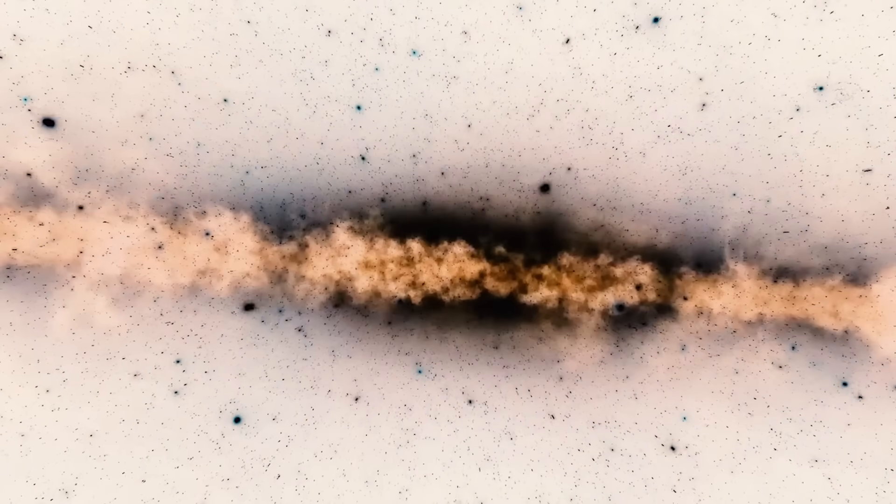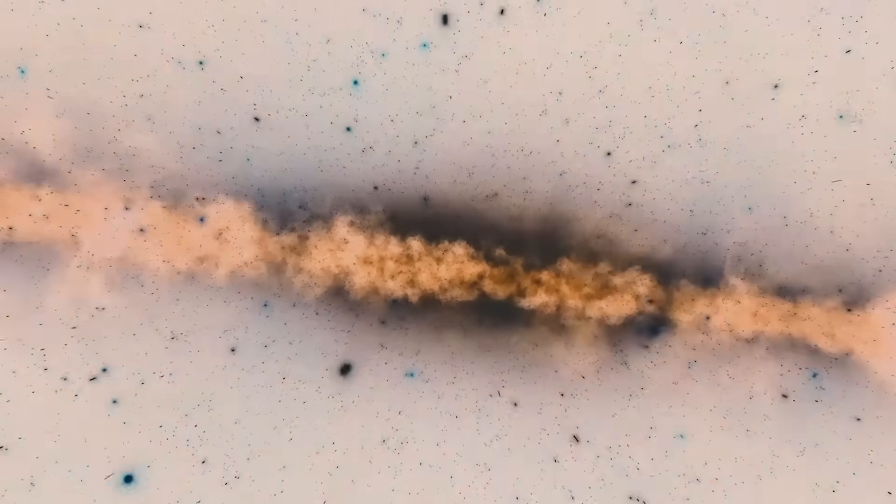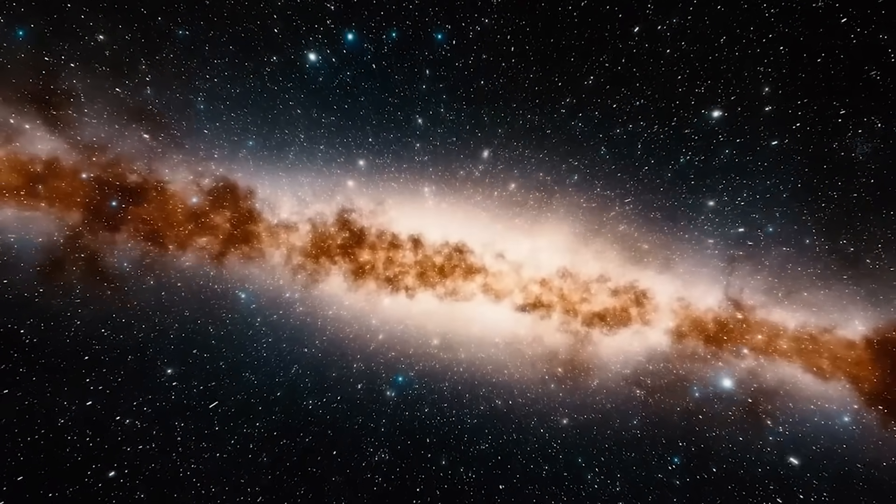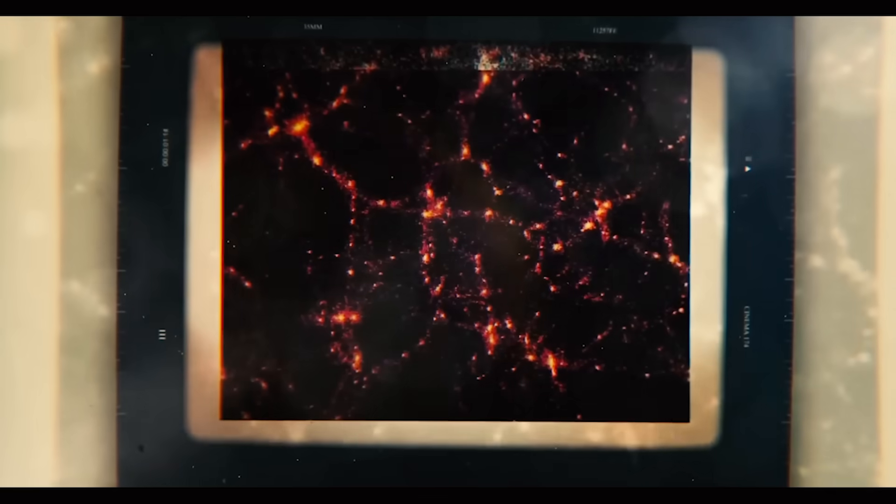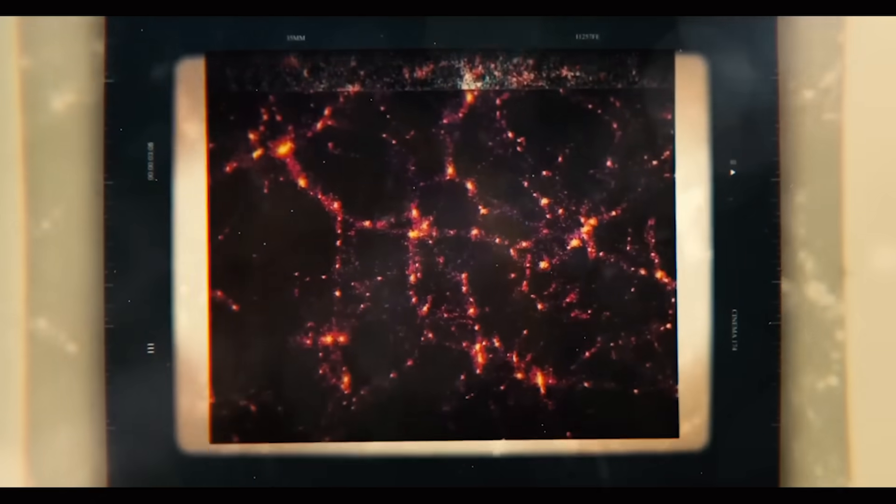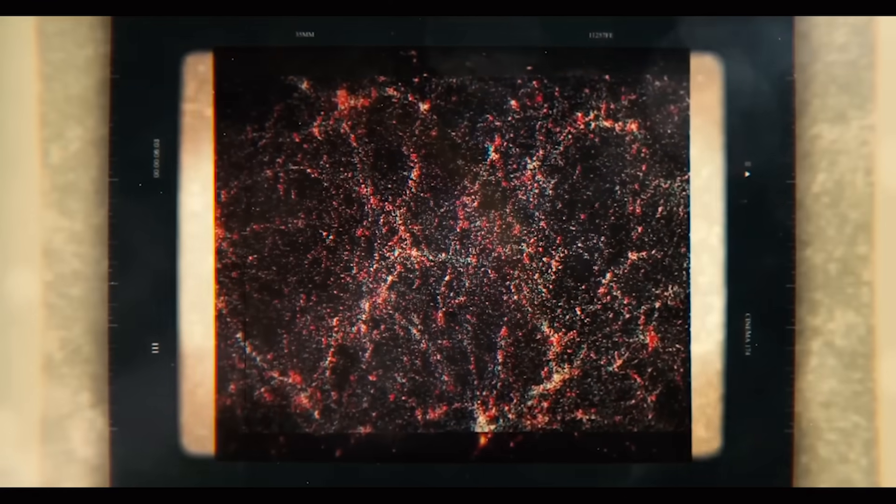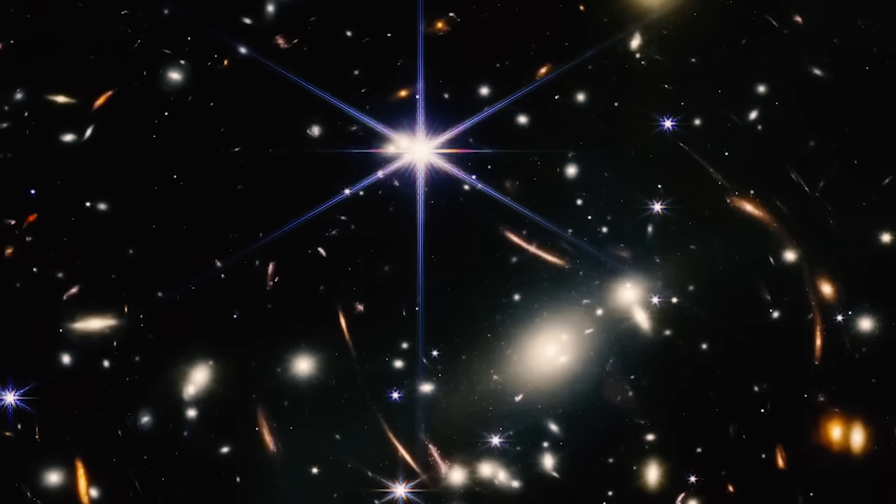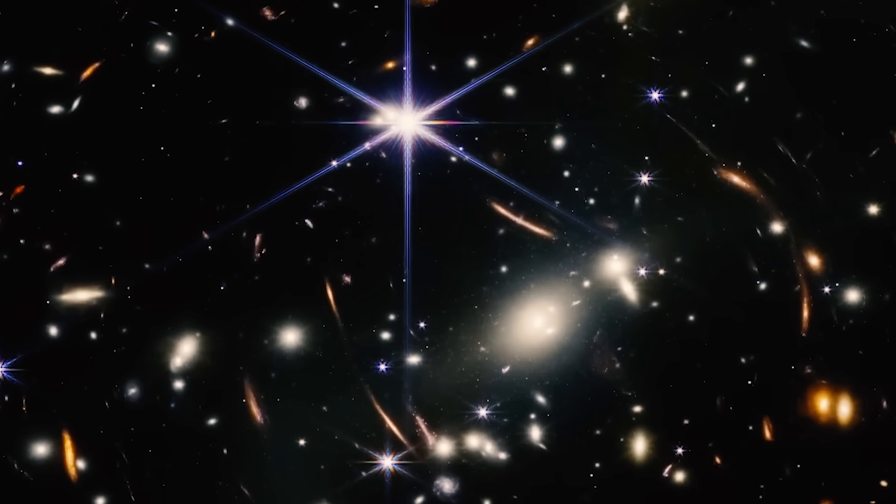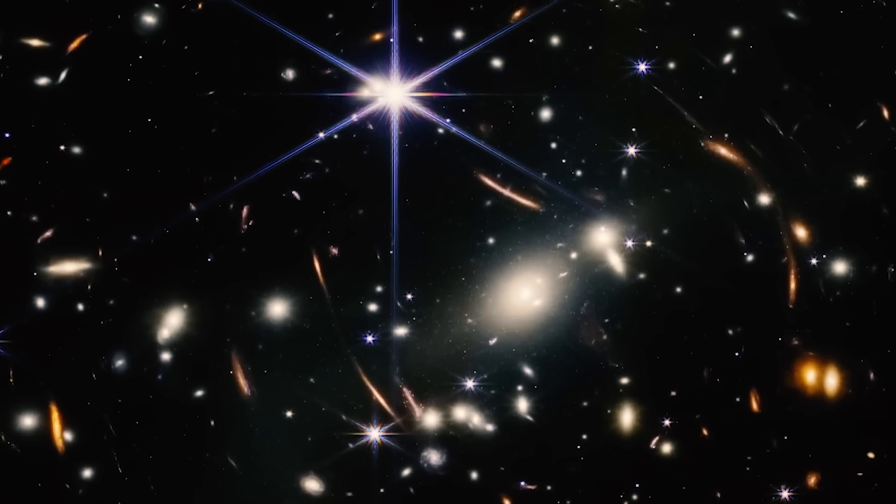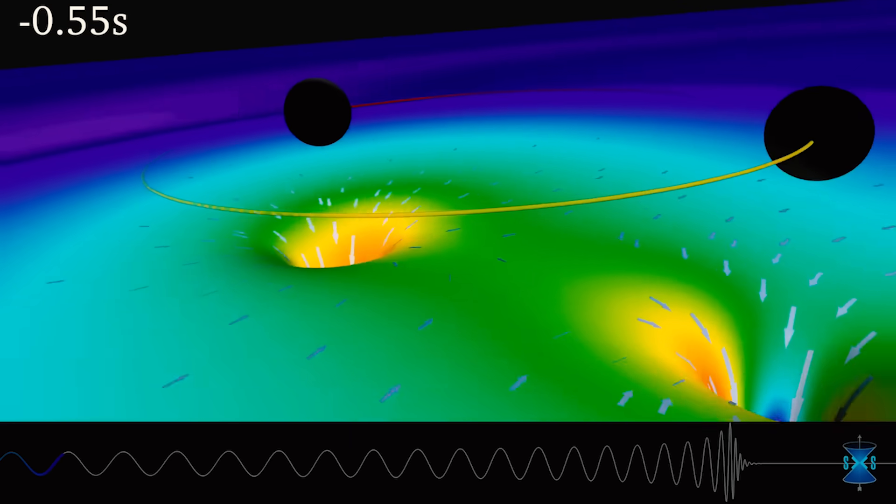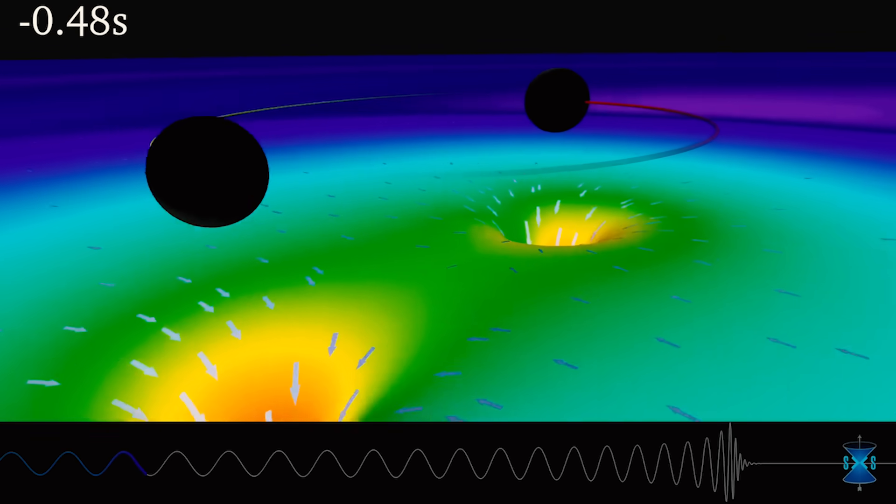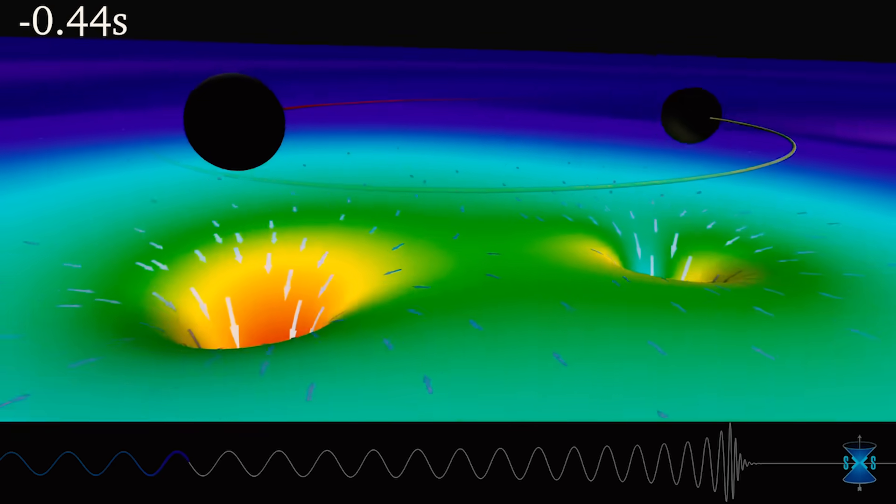Dark matter functions as an imperceptible substance in space that plays a crucial role in maintaining the cohesion of galaxies and clusters of galaxies. Comprising 27% of the total universe, it serves as an unseen framework that stabilizes the cosmic structure. Despite its lack of interaction with ordinary matter and absence of light emission, scientists can analyze it through gravitational effects, akin to studying its gravitational fingerprints.